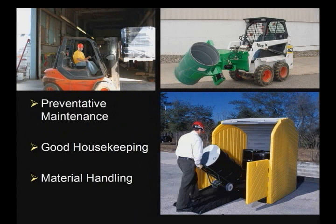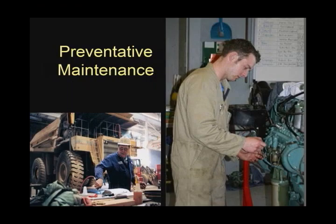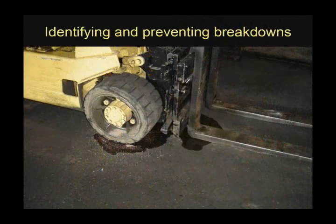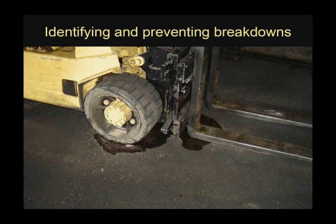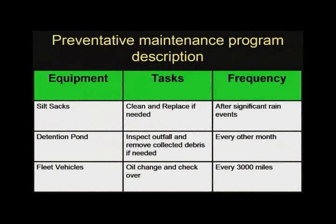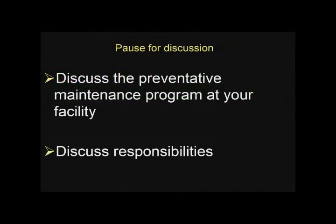Now let's discuss in further detail the non-structural control measures that you will be involved with at your facility: preventative maintenance, good housekeeping, and material handling including spill prevention and response. Preventative maintenance involves the regular inspection, testing, and cleaning of facility equipment and operational systems. These inspections will help identify and prevent conditions that could lead to breakdowns. This requirement may be incorporated into other preventative maintenance programs already being implemented at your facility. Preventative maintenance procedures include the identification of the equipment to be inspected, the tasks involved, and the frequency at which the tasks take place. Discuss the preventative maintenance program at your facility.